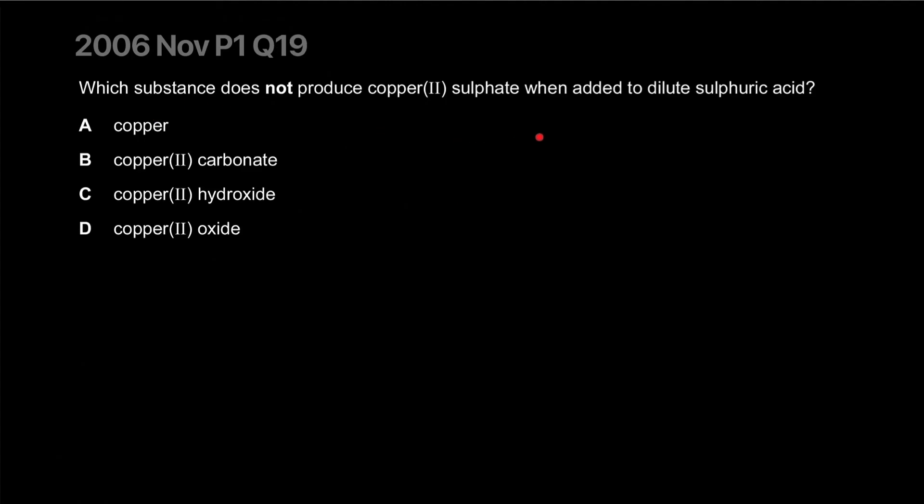Which substance does not produce copper sulfate when added to sulfuric acid? Copper is below hydrogen in the reactivity series and will not react with acids. So you can have copper canisters containing the sulfuric acid so they don't react. Carbonates readily react with acids. This is a base which will readily react with an acid. This is a basic oxide, metal oxide, which will readily react with an acid. So these will all react.